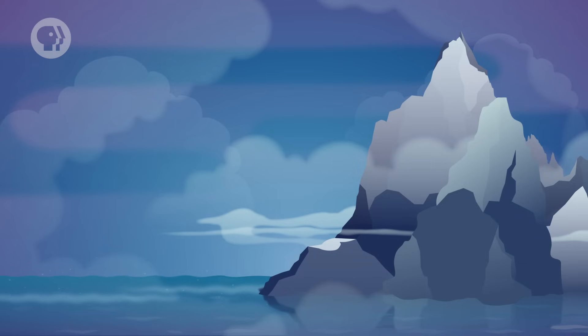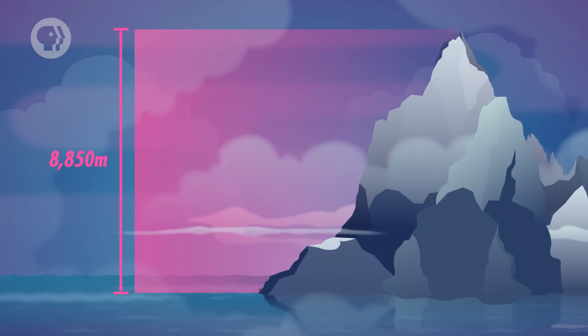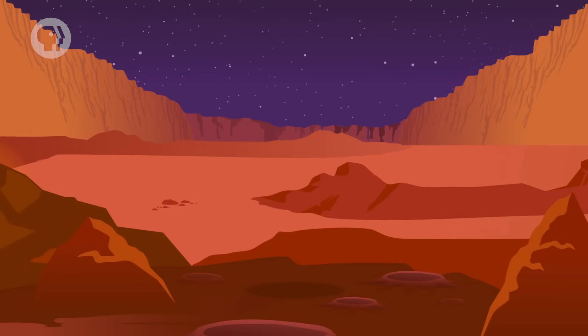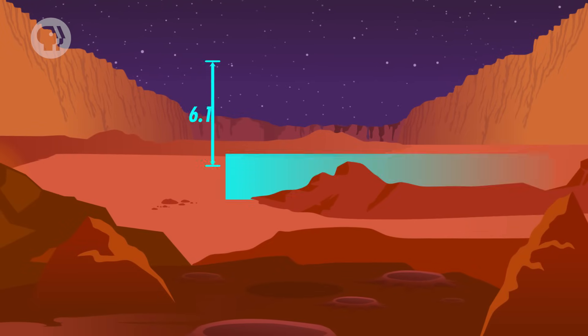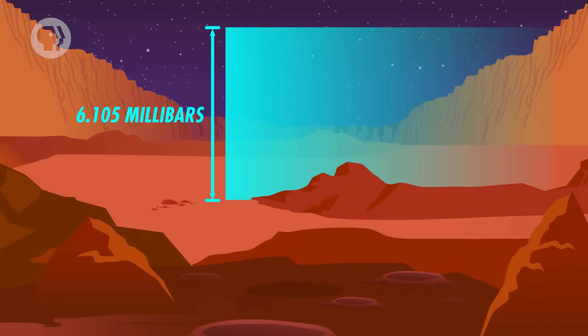But mission engineers found themselves facing a challenge they'd never faced before on Earth. On our planet, we talk about altitude in terms of sea level. The highest point on Earth, for example, is the top of Mount Everest, which is 8,850 meters above sea level. But Mars doesn't have a sea, so the mission team had to pick something else to use as a reference point. They chose the point where Mars' atmospheric pressure was 6.105 millibars.